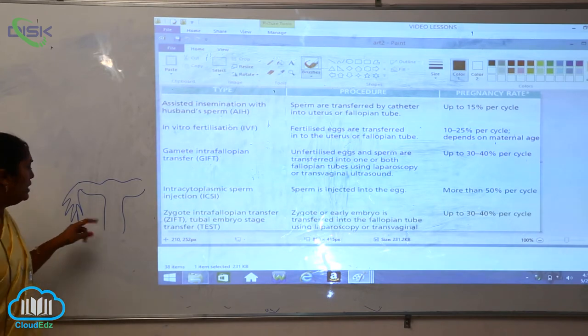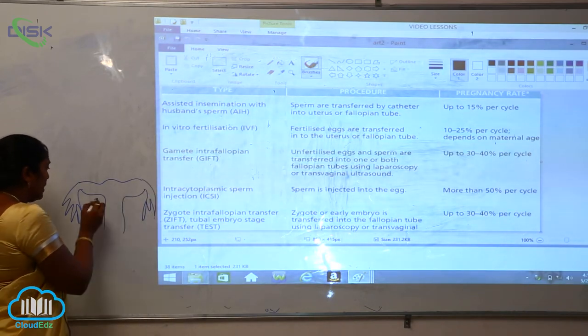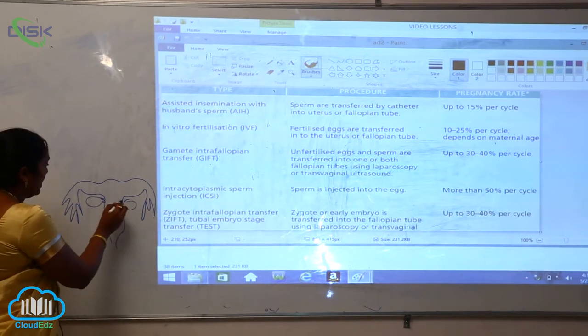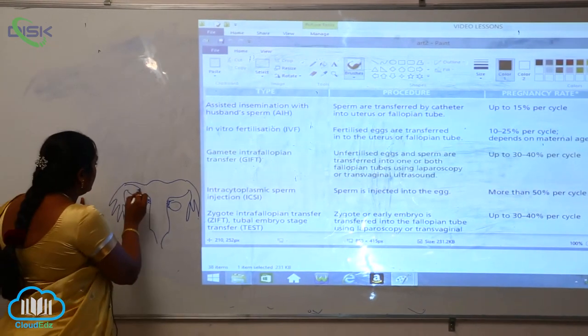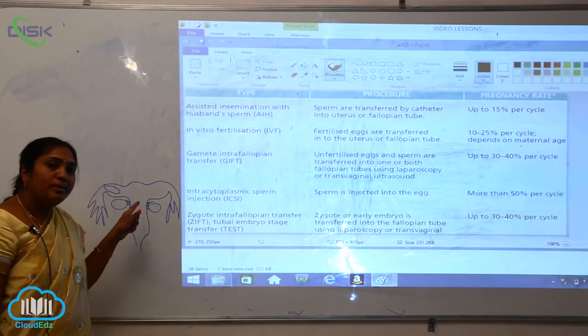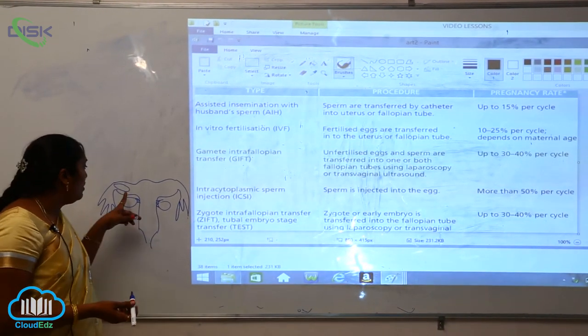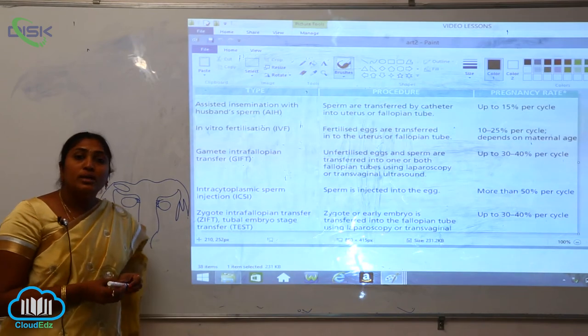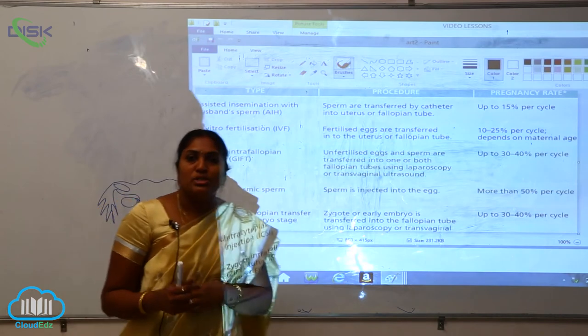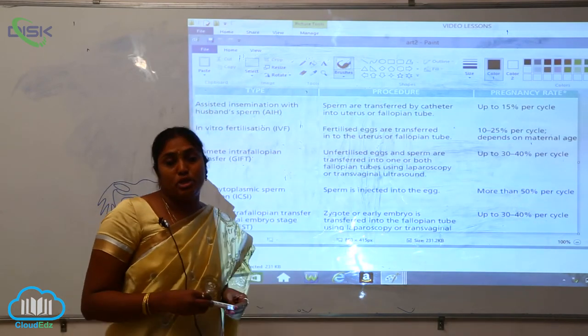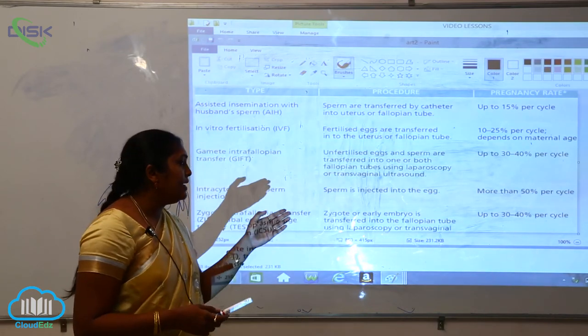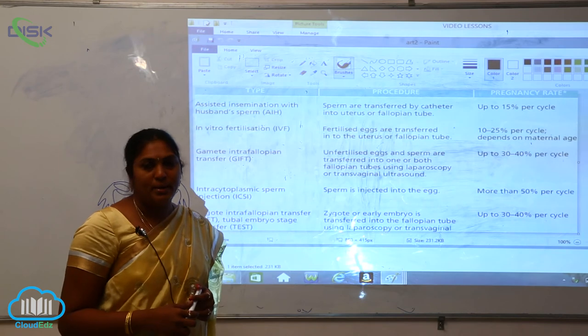What is happening here? The zygote will be implanted here in the fallopian tubes. This zygote will develop into the early embryo in the fallopian tube using laparoscopy or transvaginal ultrasound. This is the actual procedure followed here. Though the laparoscopic procedure is expensive, the rate is moderate at 30 to 40 percent per cycle.